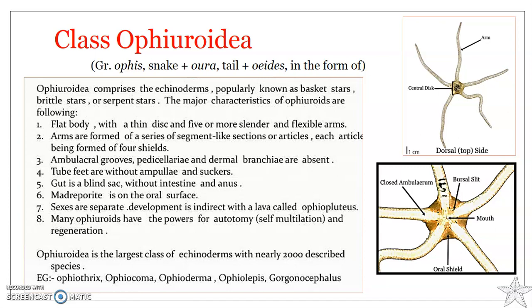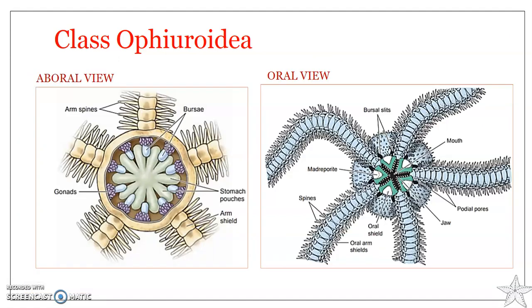Autotomy is actually self-mutilation. If a brittle star is grasped by an arm, the contraction of certain muscles may cut off and cast off that arm. This process is known as autotomy, or self-cutting, and it is used as an escape reaction. Following autotomy, ophiuroids can later regenerate the lost arm.